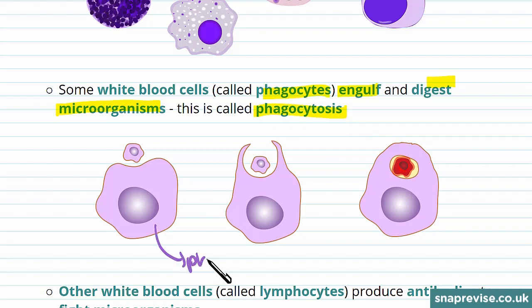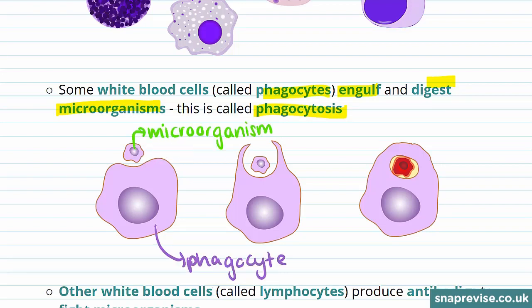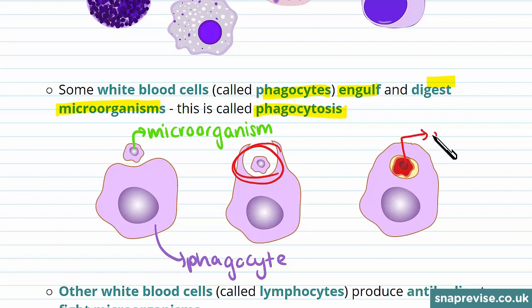This is a phagocyte and this is a microorganism. As you can see, the phagocyte has engulfed this microorganism — it then gets destroyed. This helps to prevent infections.